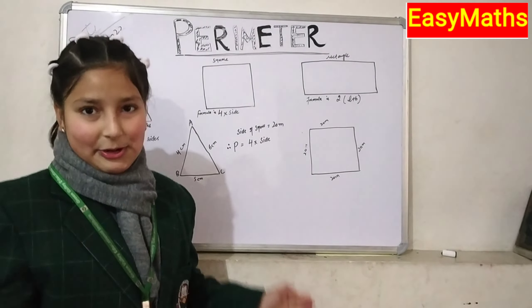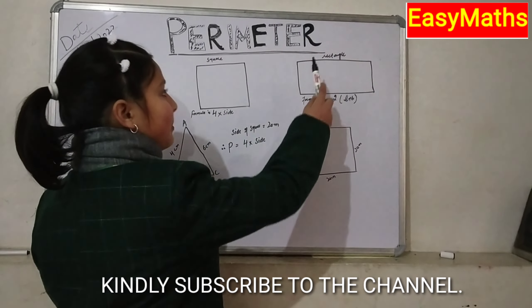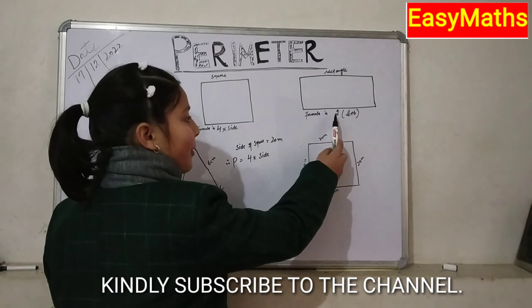Number one, triangle: formula is sum of all sides. Number two, square: formula is 4 multiplied by side. Number three, rectangle: formula is twice length plus breadth.